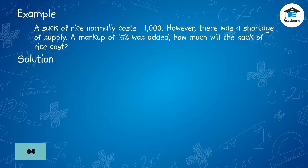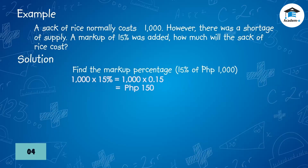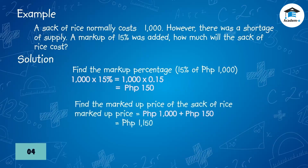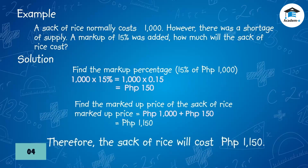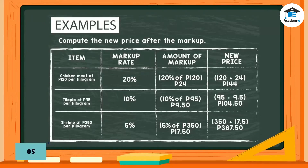Solution: Find the markup amount — 15% of 1,000: 1,000 × 0.15 = 150 pesos. Find the marked-up price: original price plus markup = 1,000 + 150 = 1,150 pesos. Therefore, the sack of rice will cost 1,150 pesos.